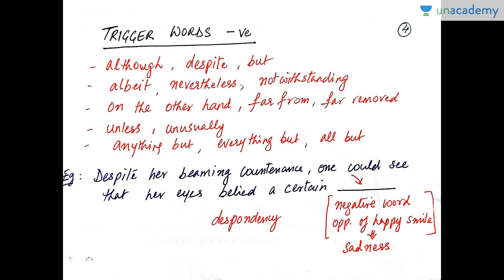Amongst negative trigger words which take the sentence in the other direction: 'although,' 'despite,' 'but,' 'albeit,' 'nevertheless,' etc. I would suggest that you take screenshots of these positive and negative words and keep looking at them from time to time. For example, 'despite her beaming countenance, one could see that her eyes belied a certain ___.' From 'despite,' we can make out that while she was smiling, her eyes were not. So we are looking for a negative, sad word — perhaps 'despondency.'